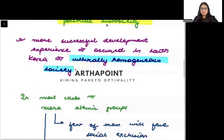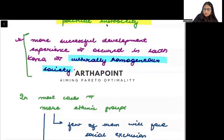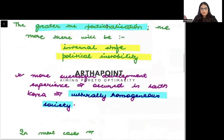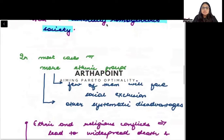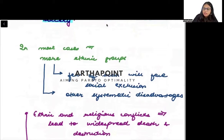Countries that are culturally homogenous — where one kind of culture is followed — have seen more successful development experiences. Those countries tend to be more stable and perform better, in most cases.